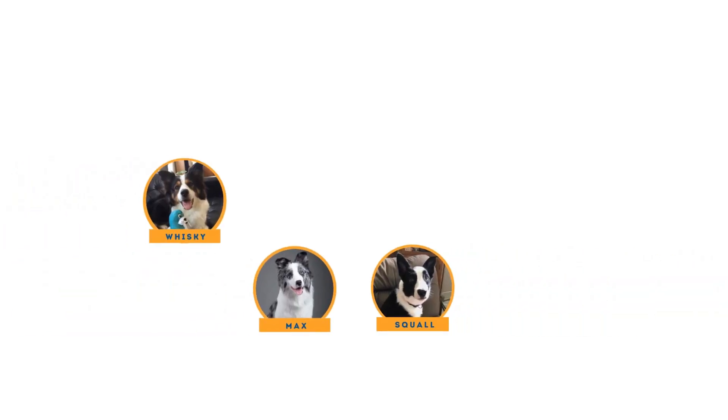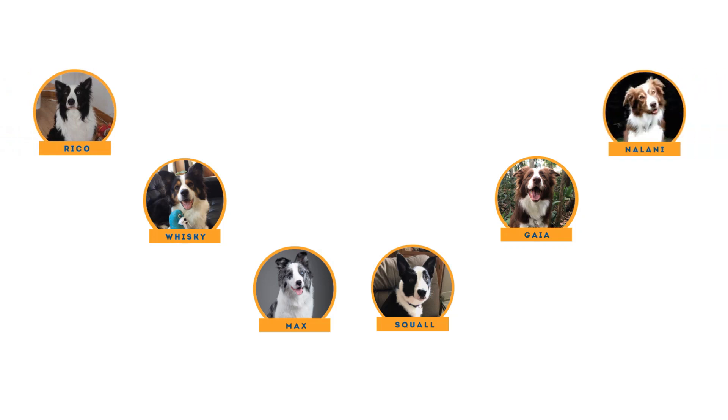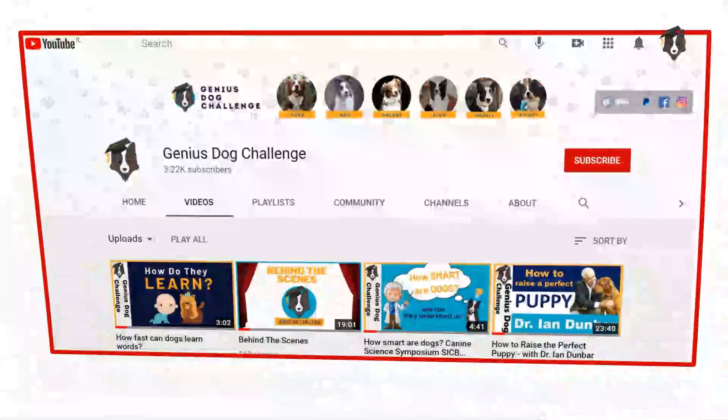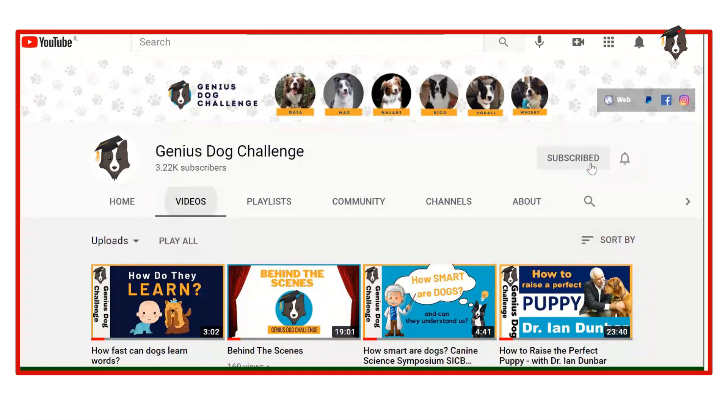To answer these questions, we tested six border collies that already knew the names of multiple objects. As the dogs live in different countries, the experiment was conducted using an online streaming software. To raise public awareness to the research, we broadcasted parts of the experiment on the Genius Dog Challenge YouTube channel.